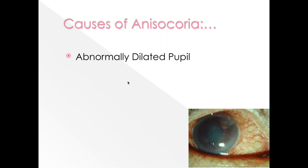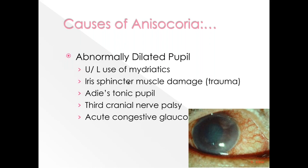When the pupil is abnormally dilated, consider: drugs such as tropicamide, phenylephrine, or accidental atropine use; traumatic damage to iris muscle; Adie tonic pupil in a healthy asymptomatic young female with a large pupil; third cranial nerve palsy presenting with ptosis and deviated eyeball along with a mid-dilated fixed pupil; and acute angle-closure glaucoma presenting with painful red eye, hazy cornea, and a fixed dilated pupil.